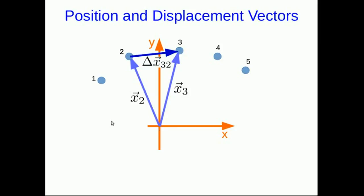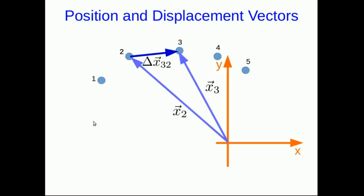So just notice because position vectors are defined as pointing from the origin to the point, that if you move your coordinate system your position vectors change. But notice that the displacement vector hasn't. It truly is independent of your choice of axes.